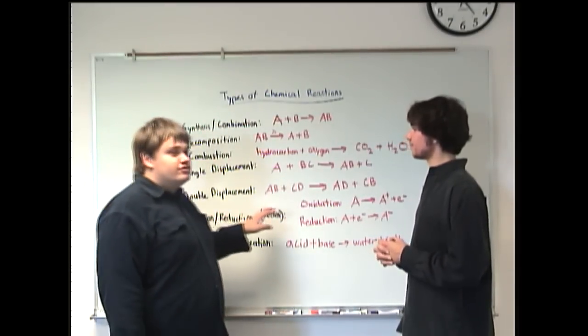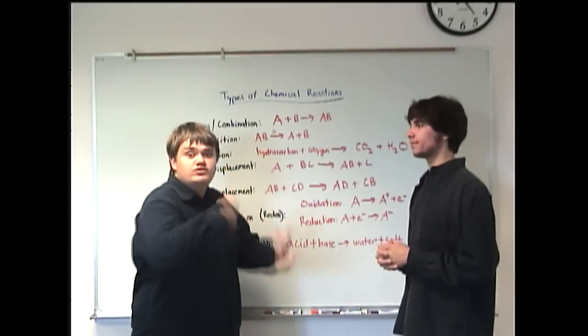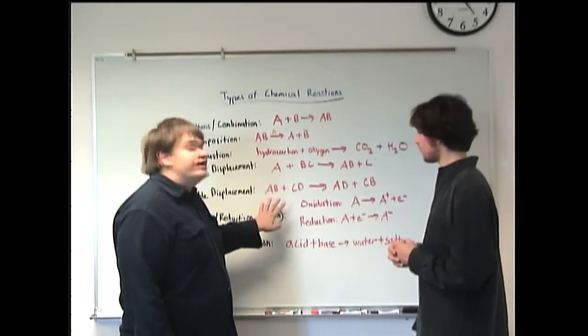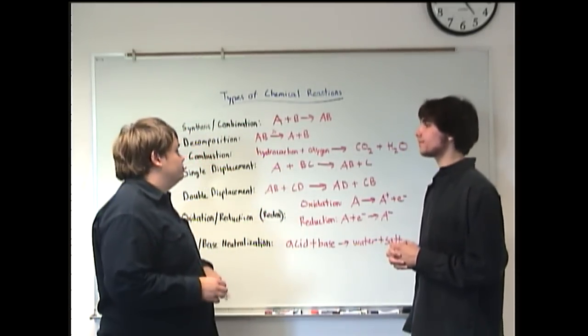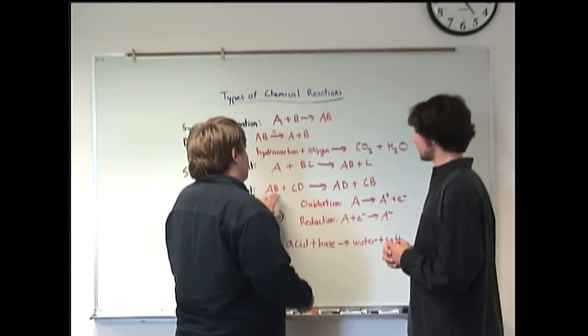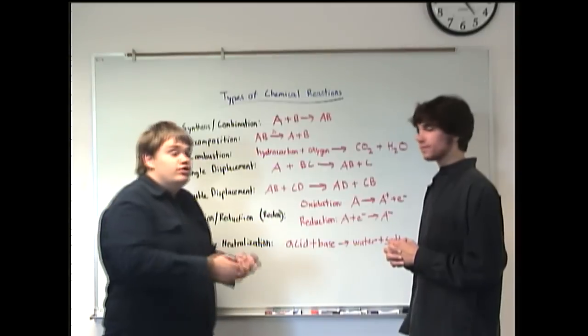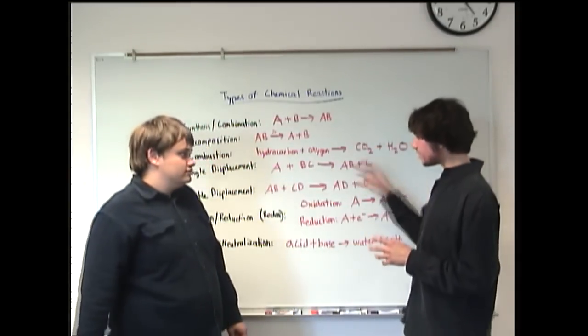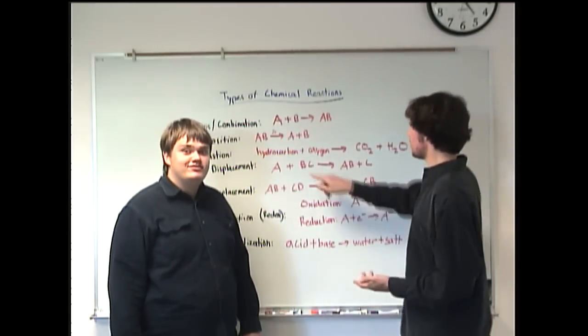But then you have another case, which is called double displacement, in which two components switch with each other. So they change partners, essentially. So you have compound AB and then compound CD. You put them together, and then in this case, D and B switch partners, and so as a result, you have AD and CB.